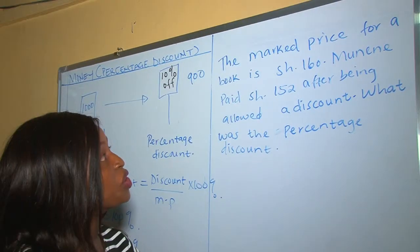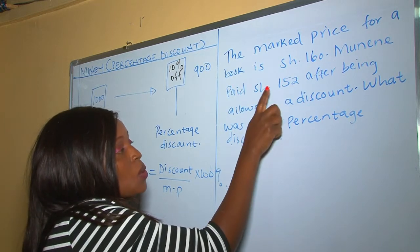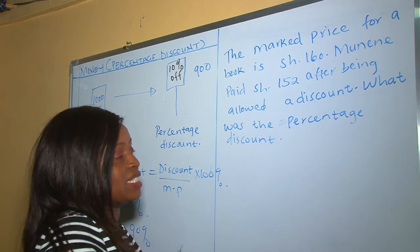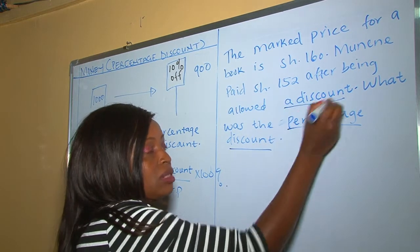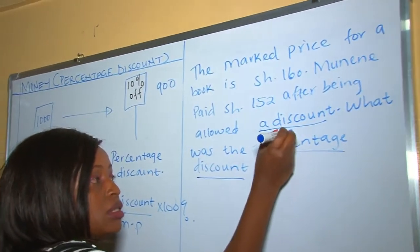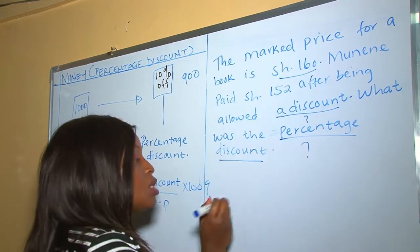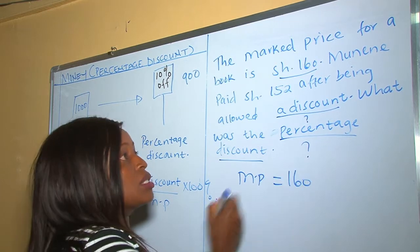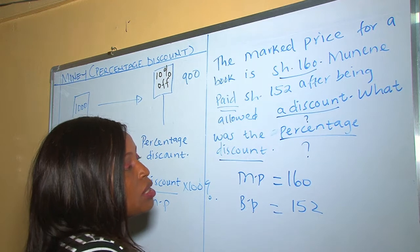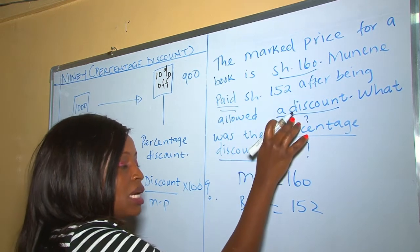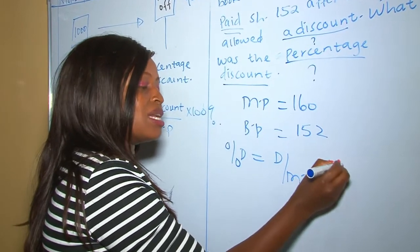In this question, the marked price for a book is 160 shillings. Monene paid 152 shillings after being allowed a discount. What was the percentage discount? We have two unknowns: the discount and the percentage discount. The marked price is 160 shillings and the buying price is 152 shillings. Before finding the percentage discount, we first need to find the discount itself.